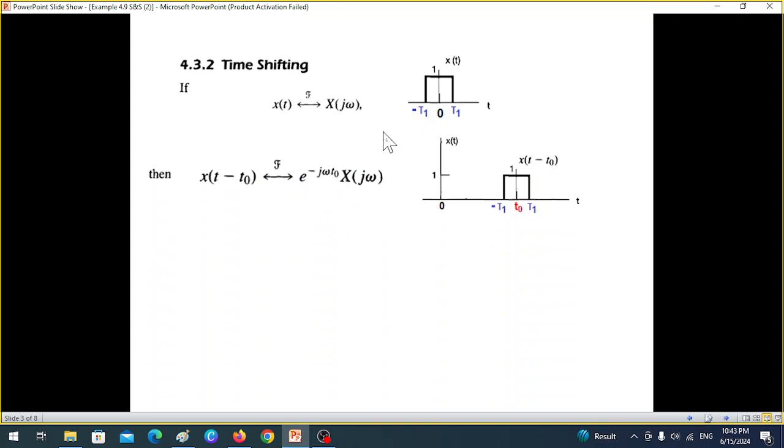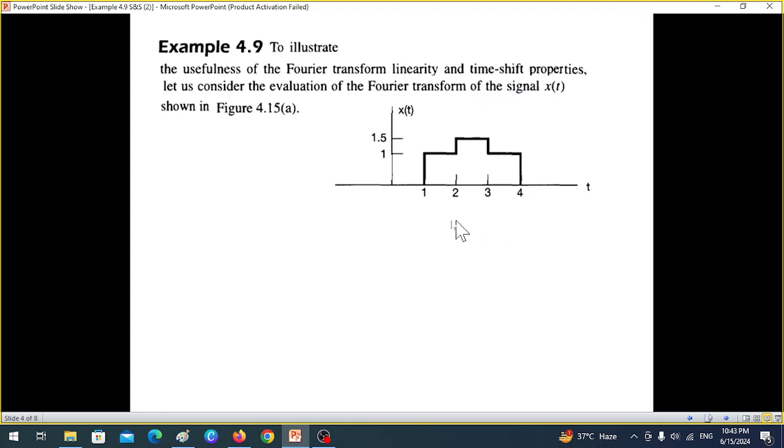So if we shift this signal to a point t0, from zero we have moved to t0, the name of the signal will change. It will become x(t - t0). Some students might get confused about this minus and plus, because we are moving towards the positive side but the sign we are using is negative. I'll explain that.